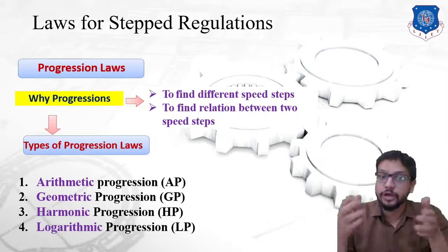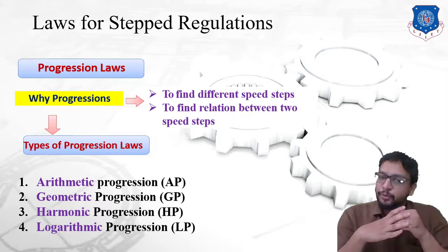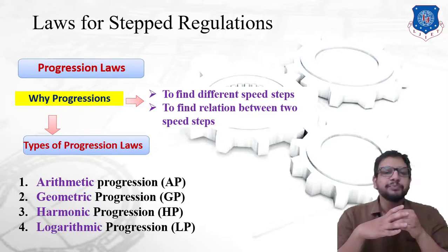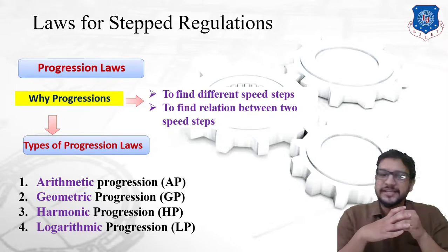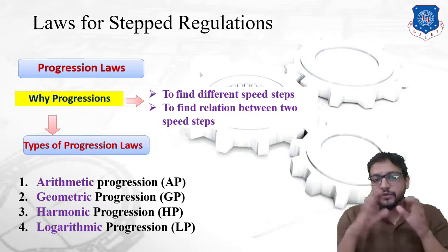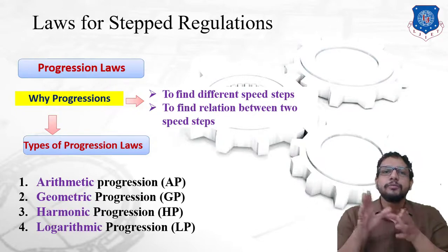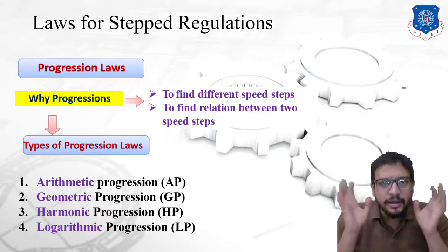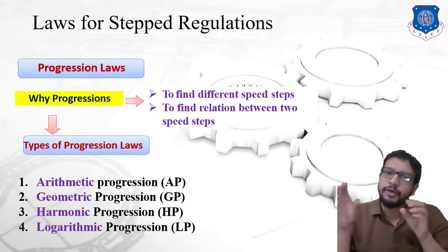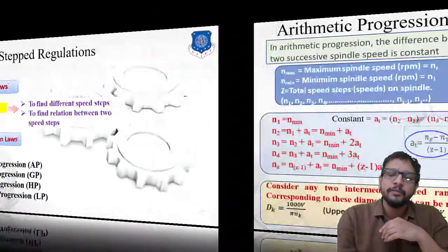Now let us see the types of progression laws. The first is Arithmetic Progression, denoted by AP. The second is Geometric Progression, denoted by GP. The third is Harmonic Progression, denoted by HP. The fourth is Logarithmic Progression, denoted by LP. We are going to study all four types in detail, and then compare them to determine which is best suited for speed distribution.